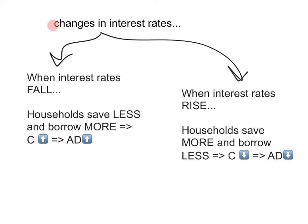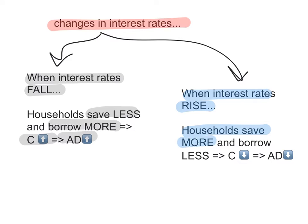The second factor is changes in interest rates. When interest rates fall, households tend to save less and borrow more because the interest rate is basically the cost of borrowing, and it's also the return for saving. When interest rates are low, households don't have much incentive to save and are encouraged to borrow more, so consumption spending increases and aggregate demand increases, shifting the curve to the right. When interest rates rise, households tend to save more and borrow less, so consumption spending decreases and aggregate demand decreases, shifting the curve to the left.